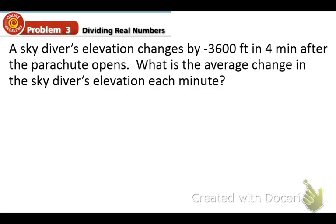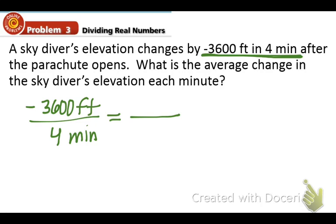So here's an application problem. A skydiver's elevation changes by negative 3,600 feet in 4 minutes after the parachute opens. What is the average change in the skydiver's elevation each minute? Well, let's first identify the given. This skydiver's elevation is changing negative 3,600 feet in 4 minutes. And it's asking for how many feet is this person going in 1 minute. Basically, what you have to do is just divide 3,600 by 4. And we know we're going to get a negative answer because we have a negative on top and a positive on bottom. And we get negative 900 feet. So, for every minute, this skydiver is going down 900 feet.